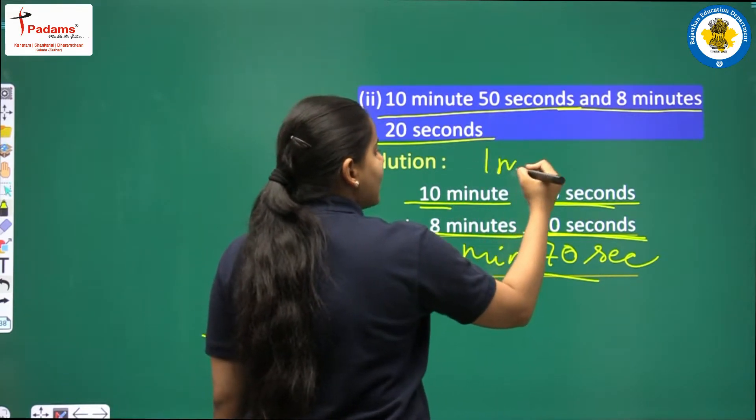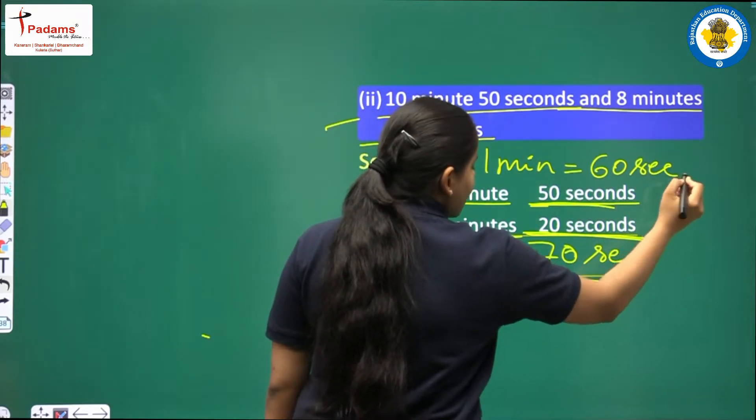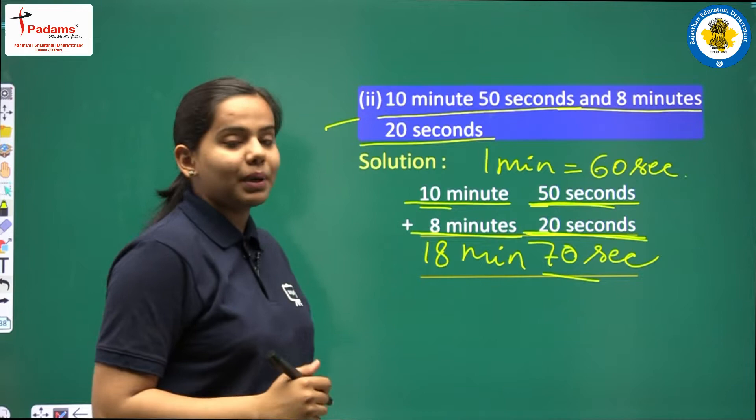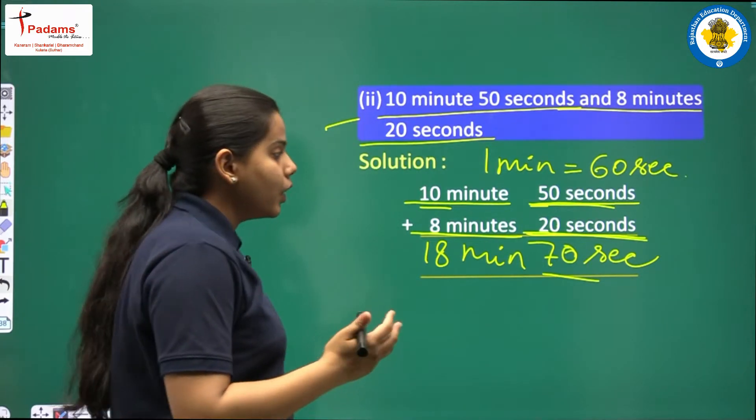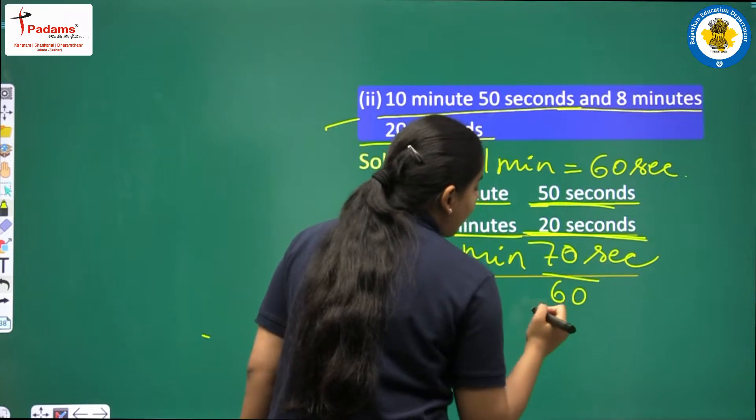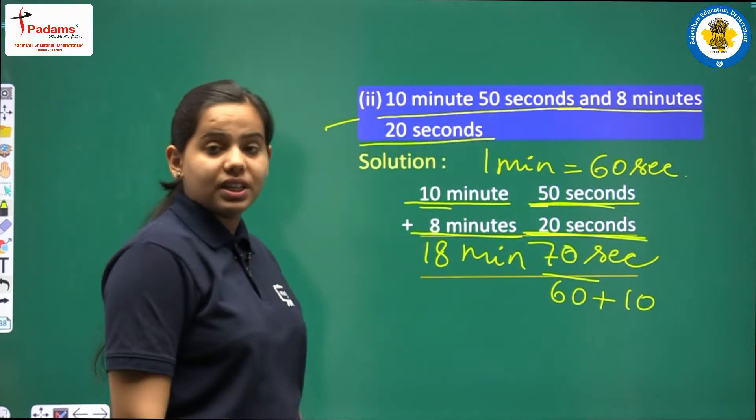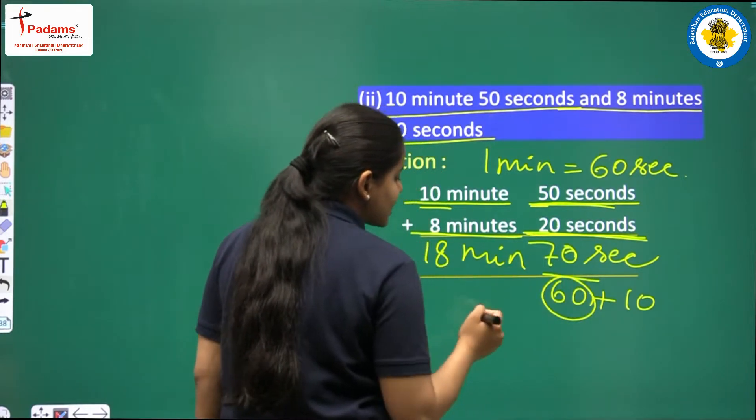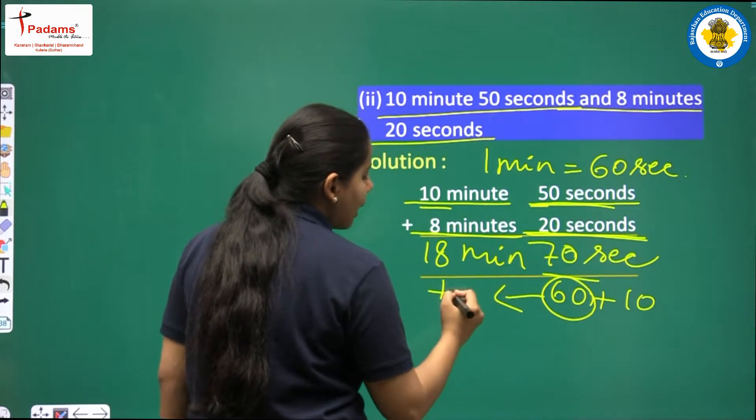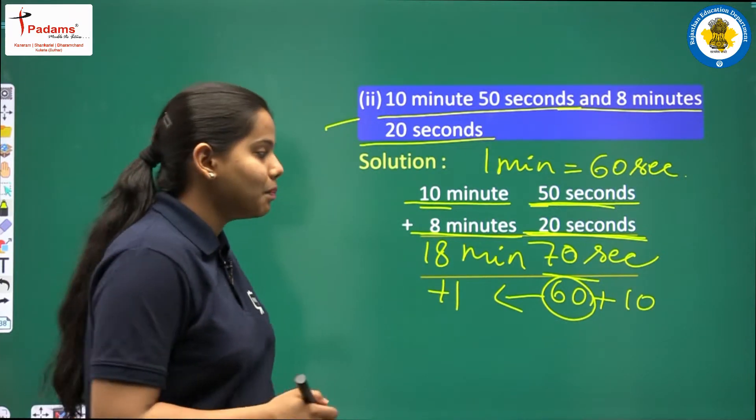Because you know that 1 minute is equals to 60 seconds. When we get 70 seconds, this means 1 minute is added. So we will subtract it. So you know how 60 will work here? 60 plus 10, here we are getting 70. So we will subtract this 60 from it. It will become a minute there. Because 60 seconds is equals to 1 minute.